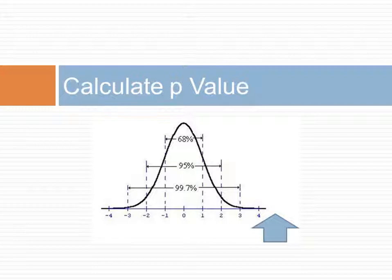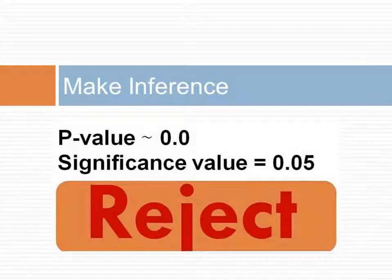We now look up the p-value associated with a z of 5.18. This z score is not in the table, and gives us a p-value for the right tail of nearly zero. The two-sided test doubles this, but it is still very negligible. This p-value of approximately zero is smaller than the significance value of 0.05, so we reject the null hypothesis. The order of asking the question did make a difference in the responses.